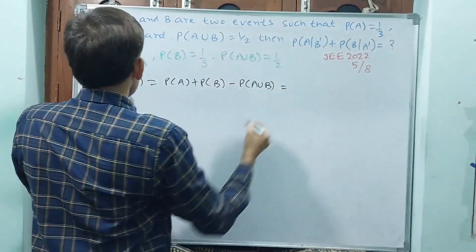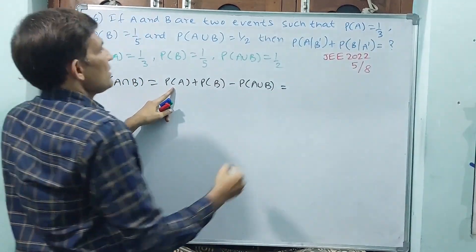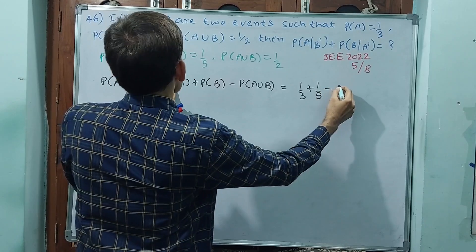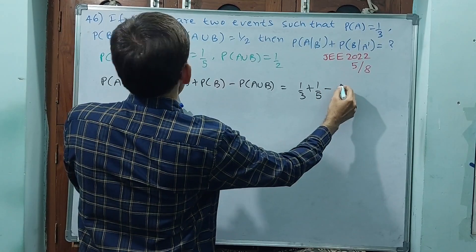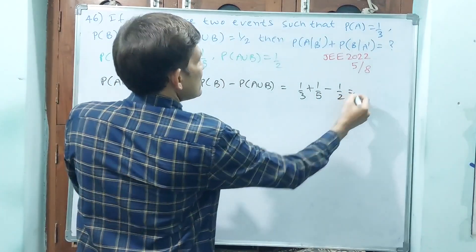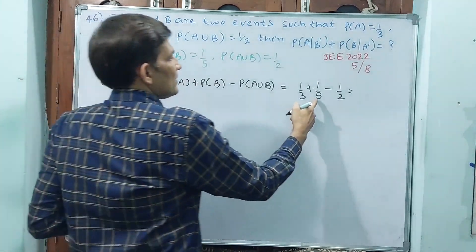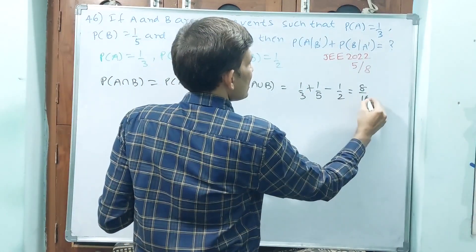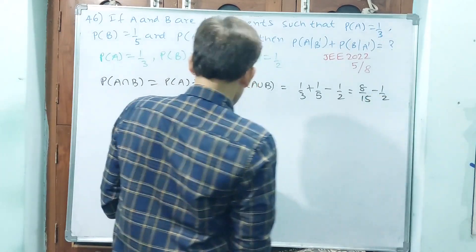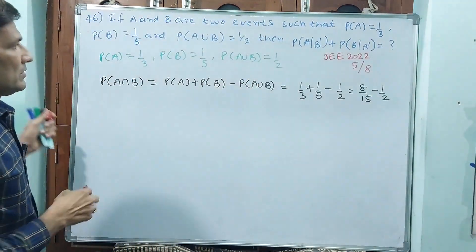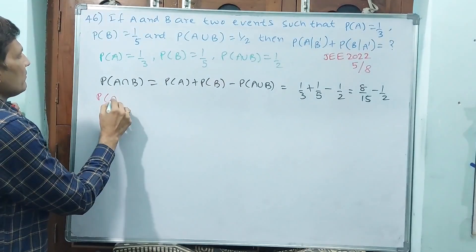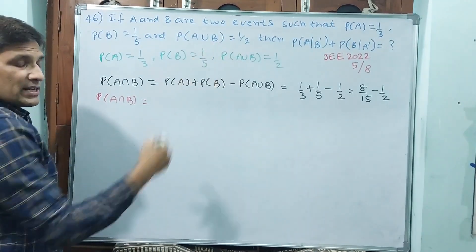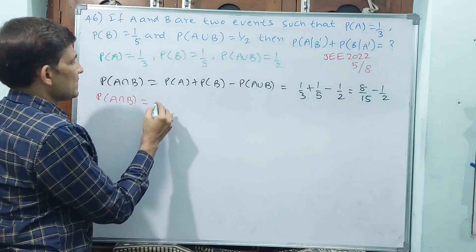That is equal to 1 by 3 plus 1 by 5 minus 1 by 2. See, 5 plus 3 gives 8 by 15, so 8 by 15 minus 1 by 2. Probability of A intersection B is equal to 16 minus 15 which is 1, so 1 by 30.